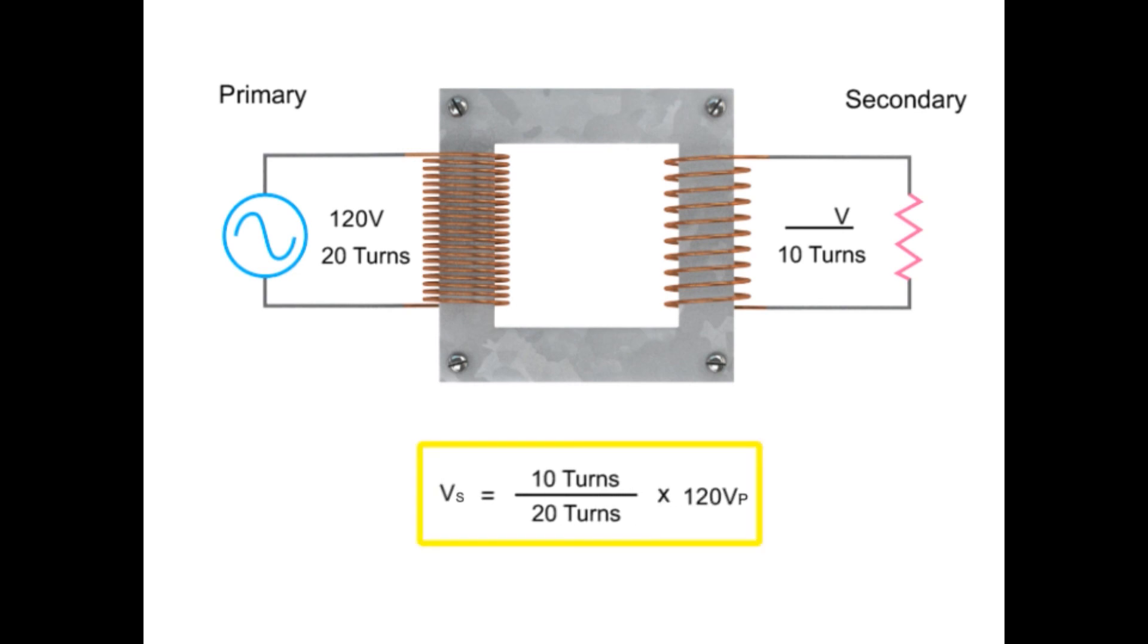Rearranging the formula and then dividing 10 turns by 20 turns, we get 0.5 multiplied by 120 V. This results in a calculated step down voltage of 60 volts.